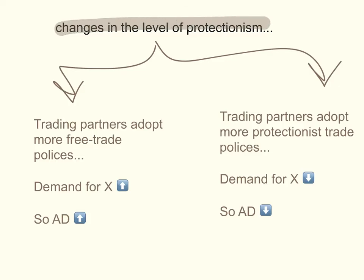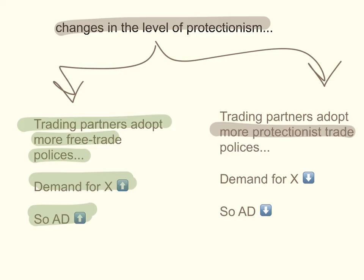The last factor is changes in the level of protectionism. If our trading partners adopt more free trade policies — they cut down on their tariffs and stop protecting their domestic industries — the demand for our exports will increase, and so aggregate demand will increase. But if our trading partners are upset with us and slap some tariffs on our goods and services, adopting more protectionist trade policies, the demand for exports we're selling to them will decrease, and therefore aggregate demand will decrease. So, the demand for exports and imports is affected by the income of our trading partners, our own domestic national income, the level of exchange rates, and the levels of protectionism or free trade amongst our trade partners — and this is what affects net exports and hence causes shifts in the aggregate demand curve.